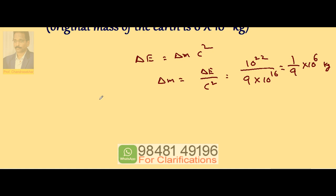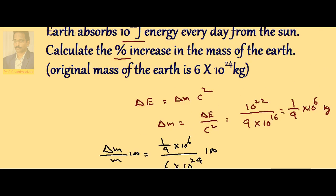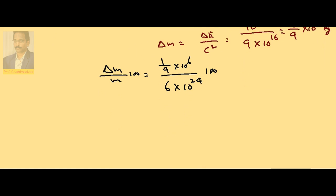We need the percentage change, which is delta M by M into 100. So it is (1/9 × 10⁶) divided by (6 × 10²⁴) into 100. This gives the percentage increase in the mass of the earth.